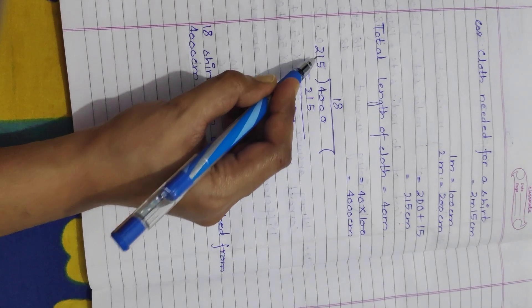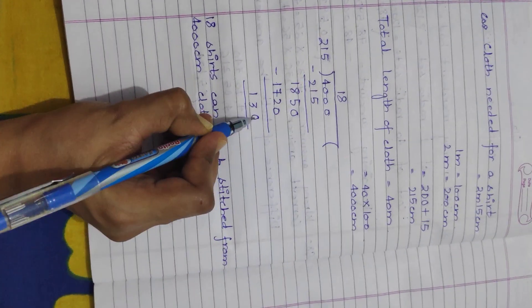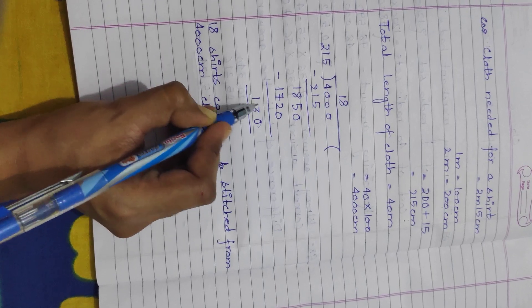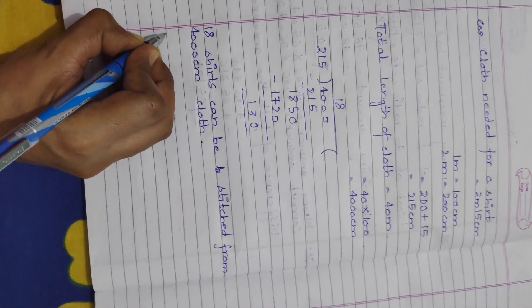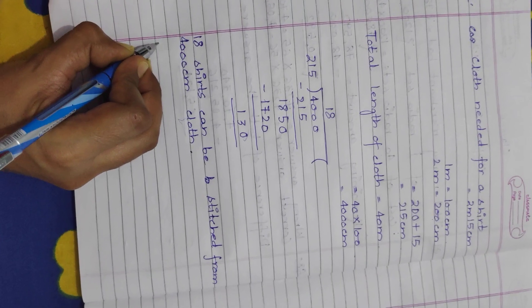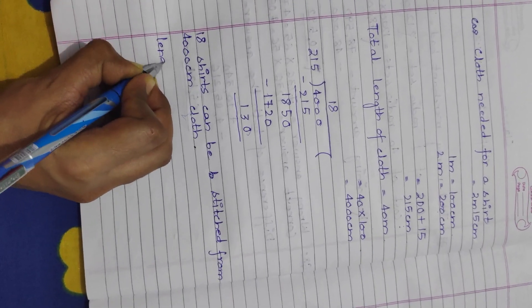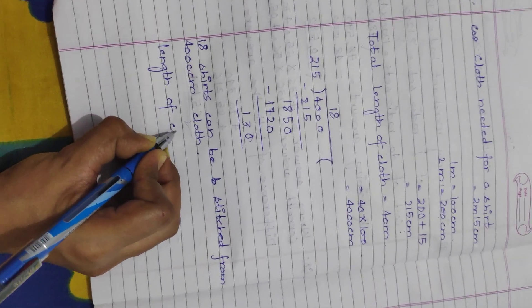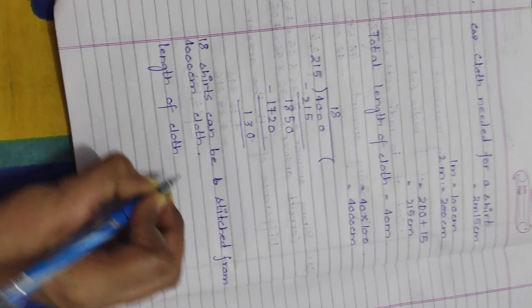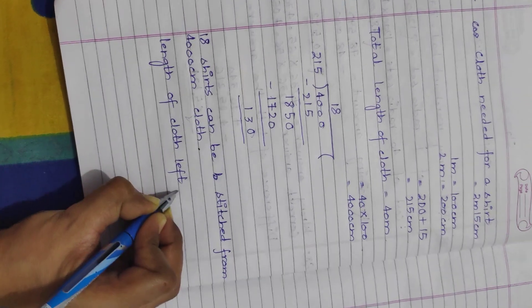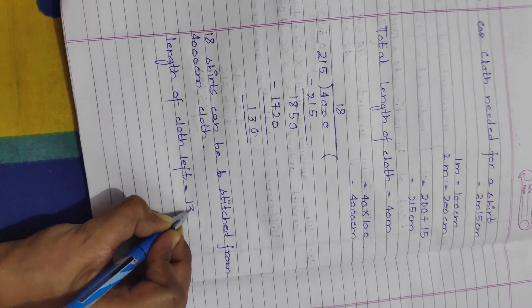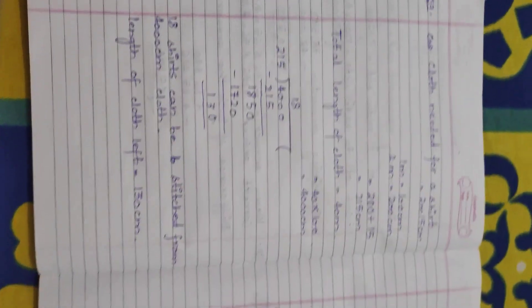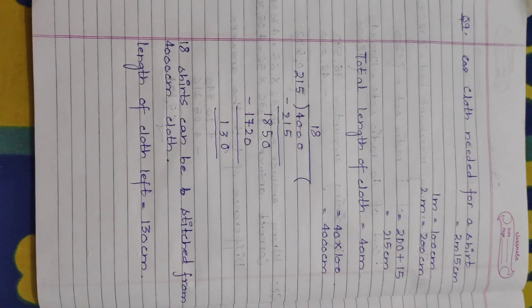Since 130 cannot be divided by 215, this is the remaining length of cloth. The length of cloth left is 130 centimeters. Thank you.